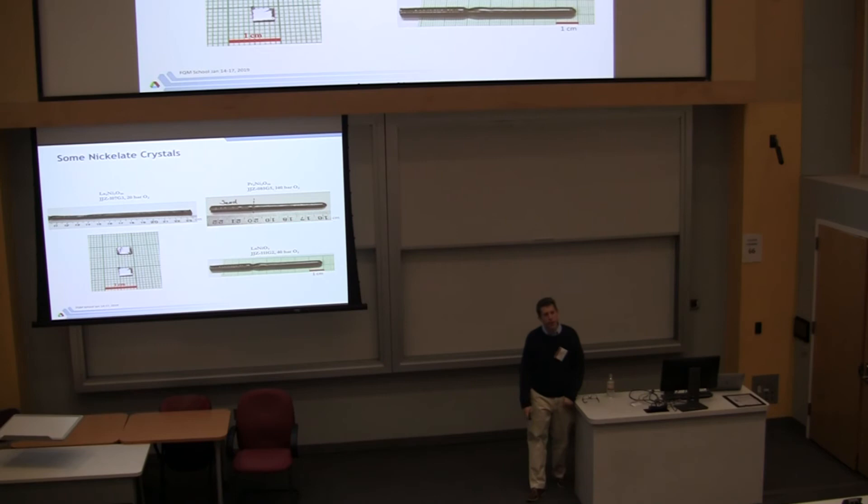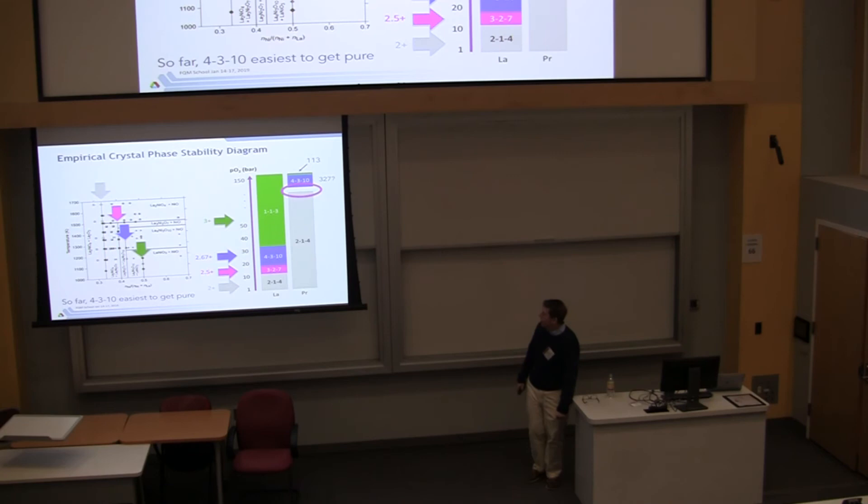This 2-1-4 is much more stable at high pressure. We never found the 3-2-7, and 4-3-10 is only at our limit of what we can do. And we started to see hints of 1-1-3. We'll come back to that. But we weren't under our furnace to be able to make that as a single phase. But we were able to grow this 4-3-10 material, this three layer material. It was the easiest one to grow in the clean form. And we studied it.